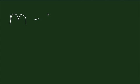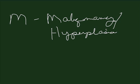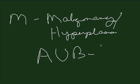The M is for malignancy and hyperplasia, with hyperplasia being considered a pre-malignant condition. So if malignancy or hyperplasia are the cause, then it would be designated AUB-M.